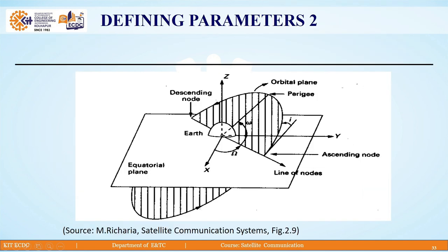Another diagram gives a clear picture of Ω, omega, the orbital plane, the equatorial plane, the satellite orbit, and the line of nodes — that is, the ascending node and descending node. You can see the ascending node, and opposite to it is the descending node.